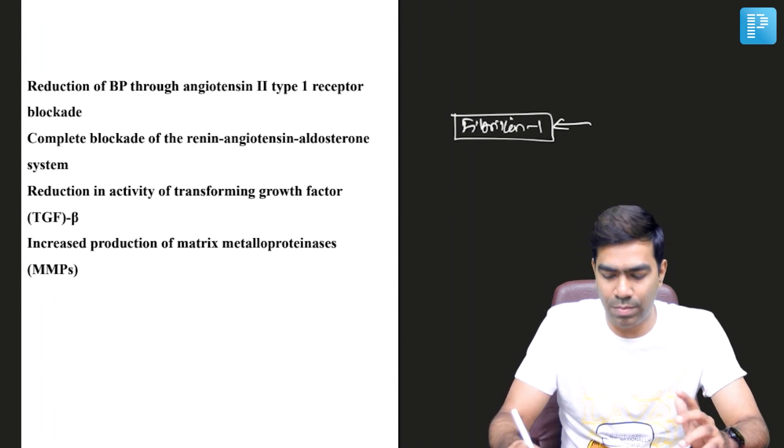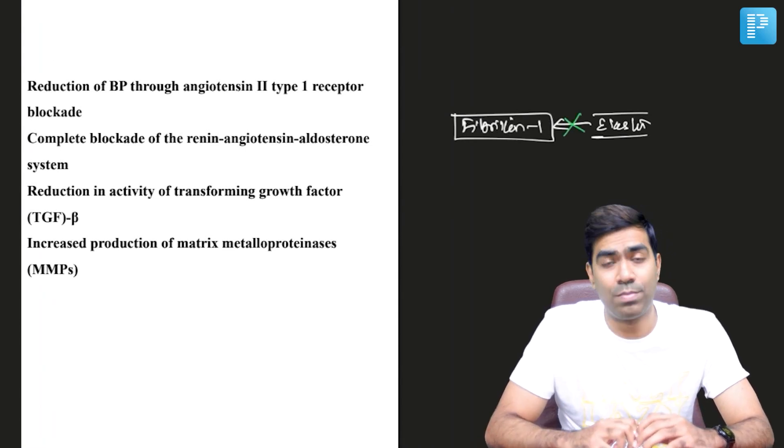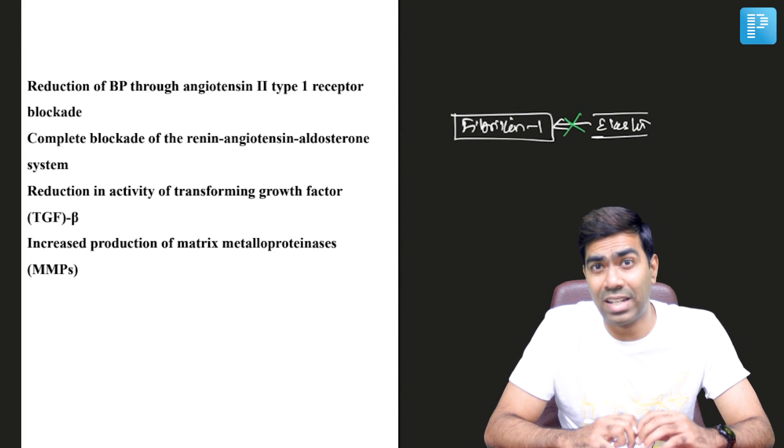Fibrillin-1 is going to act as a scaffold for attachment of elastin. If there is a fibrillin-1 gene mutation, you are not going to have attachment of the elastin fibers, and that will be disintegration of elastin.